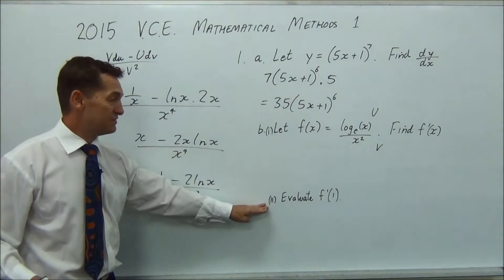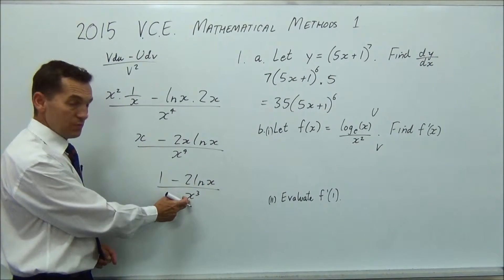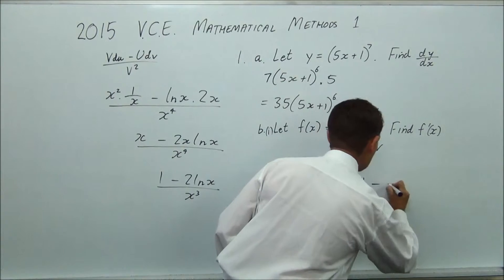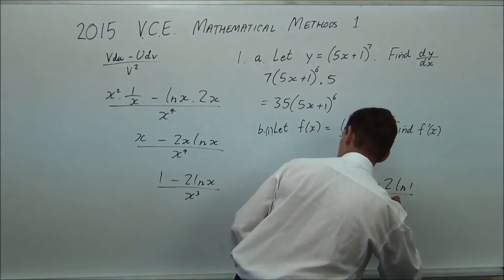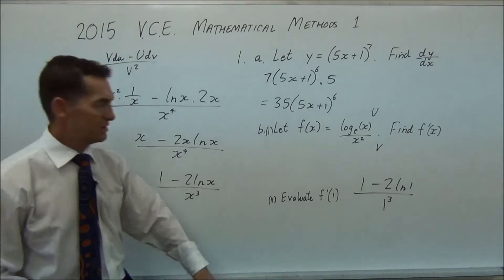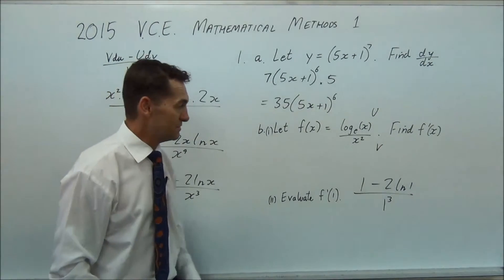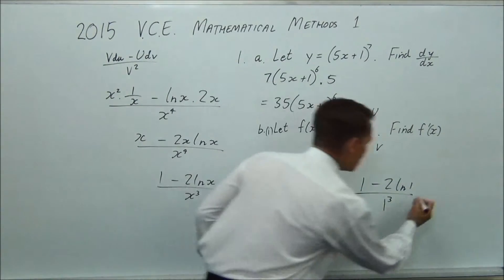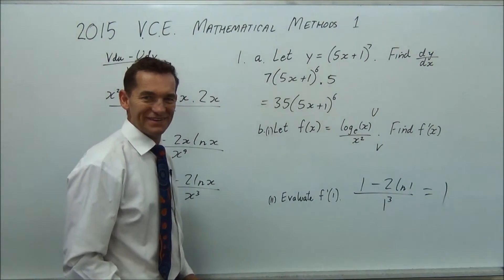Next one, evaluate f'(1). So all you're going to do is put a 1 there and a 1 there. So let's do that. So we're going to get 1 minus 2 times log 1 all divided by 1 cubed. Well, if you look at that, you press log 1 on your calculator, you should know log 1 is 0. So this is just 1 minus nothing over 1. So your answer is 1 and you're done.